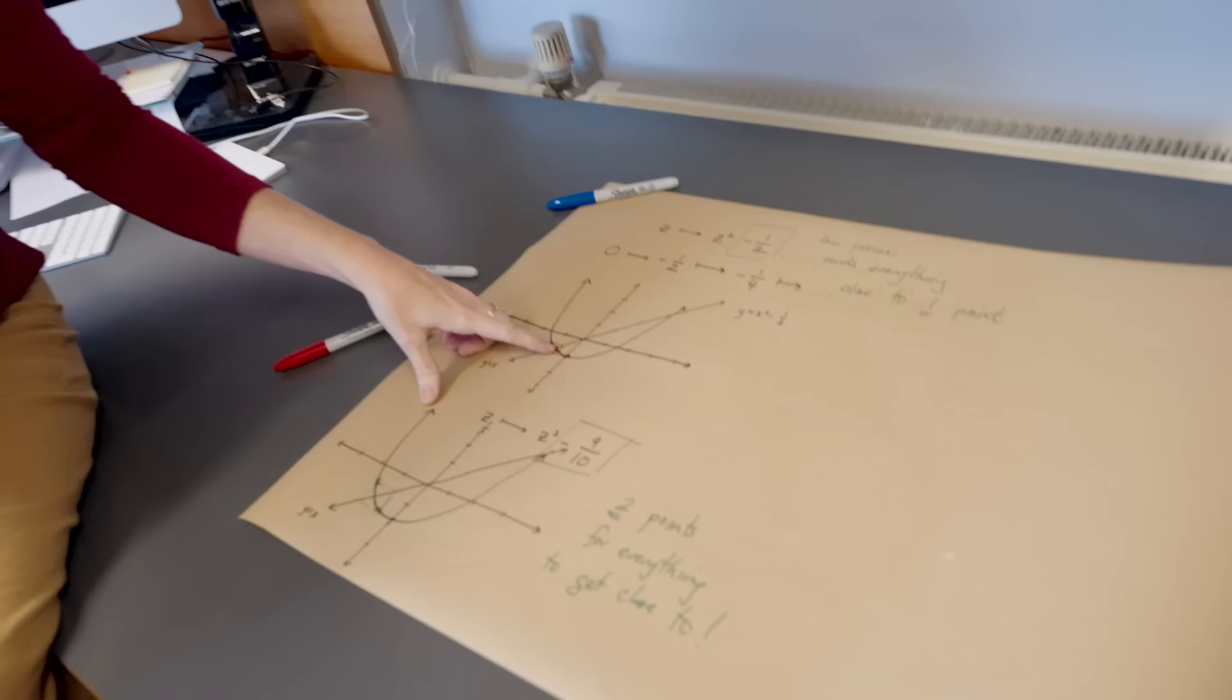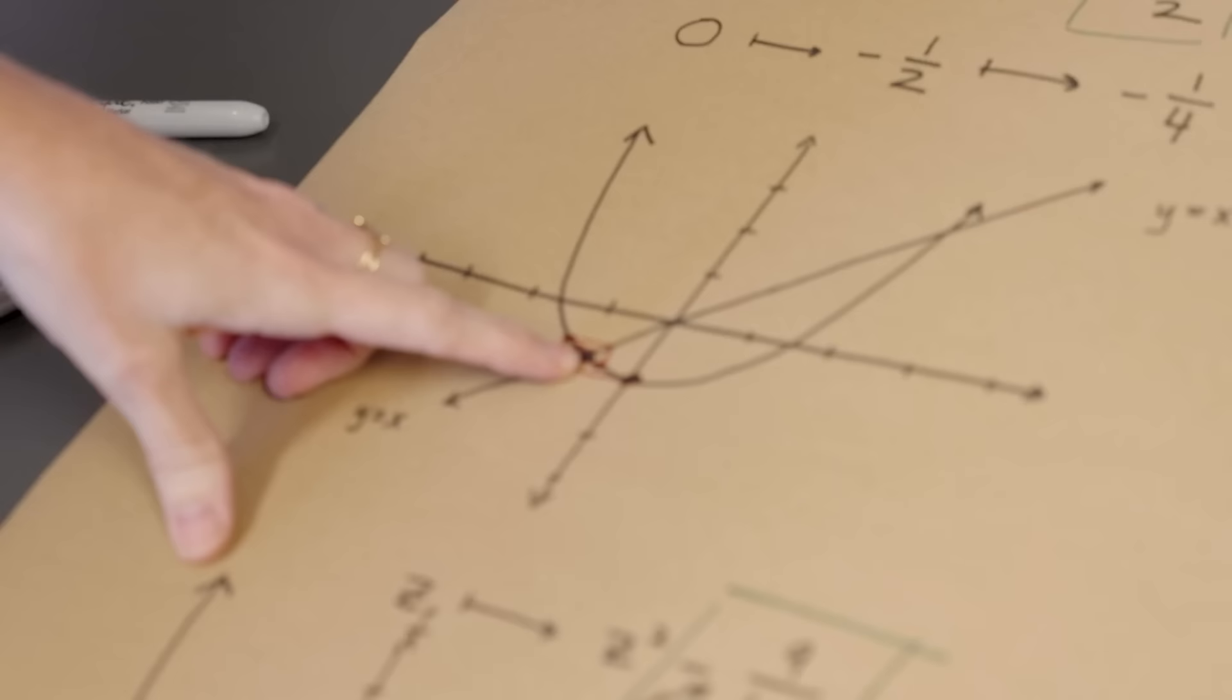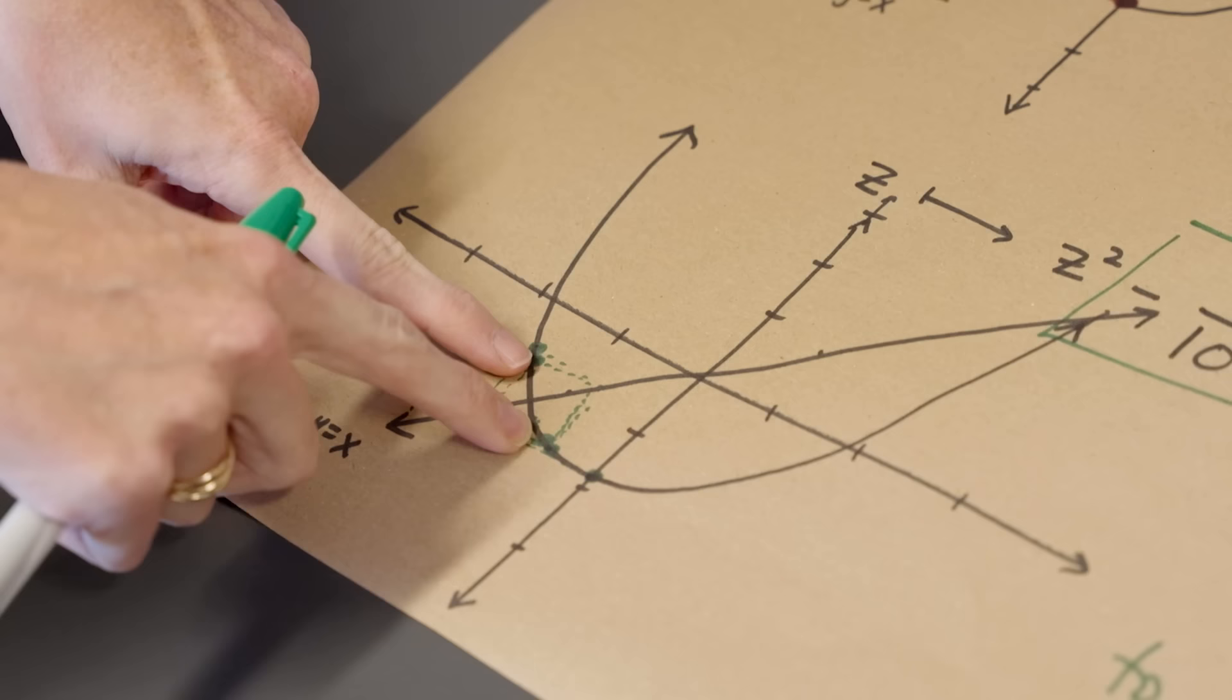So in minus one half, we saw the example of a single point here, where everything gets close to that. In minus nine tenths, hopefully you believe that there are two separate points here, and everything comes in closer and closer to those two points. It's possible to do this with more than two, so in fact for any number that you want, you can cook up a function like this, so that you have that number of points as your limit points.